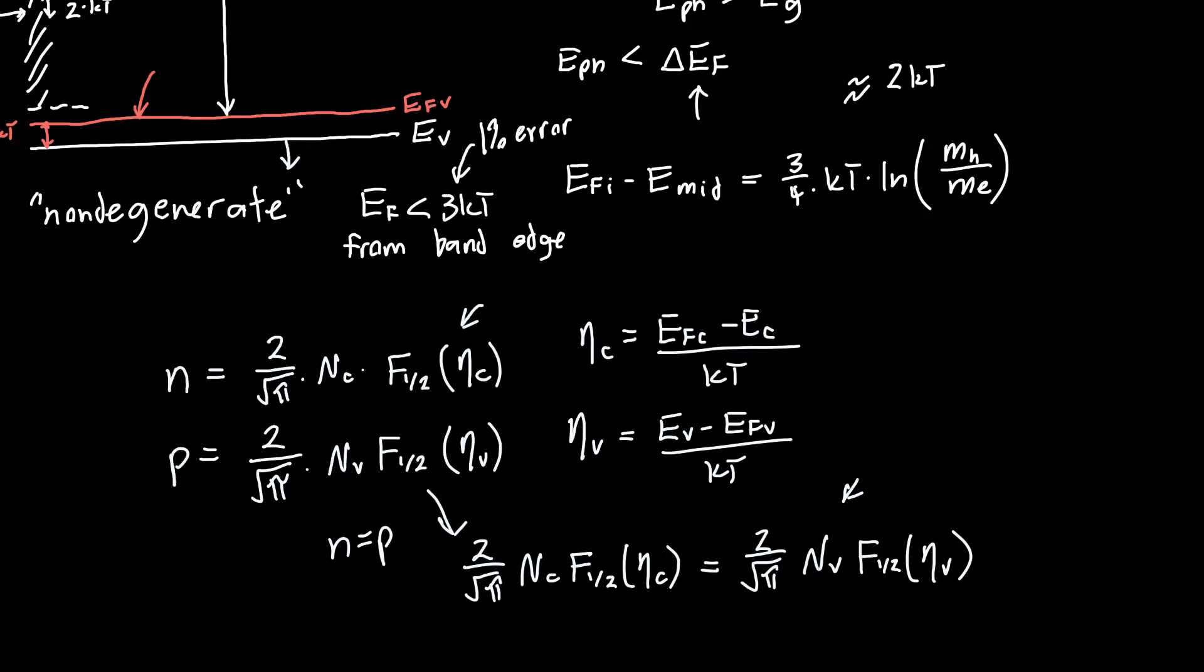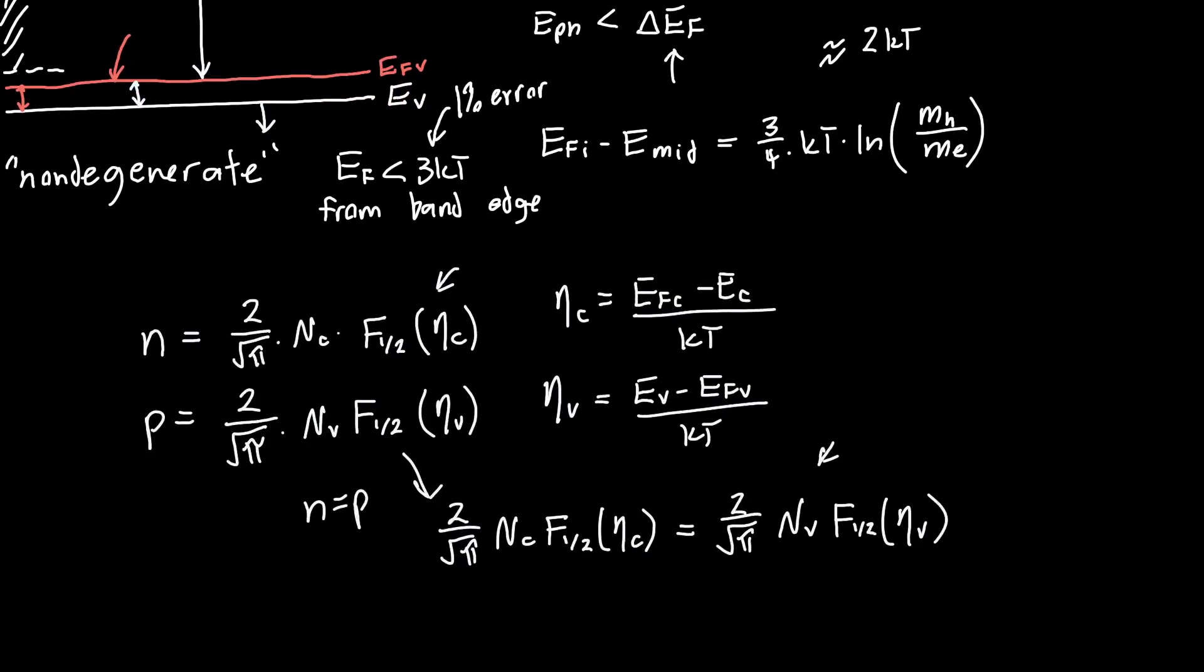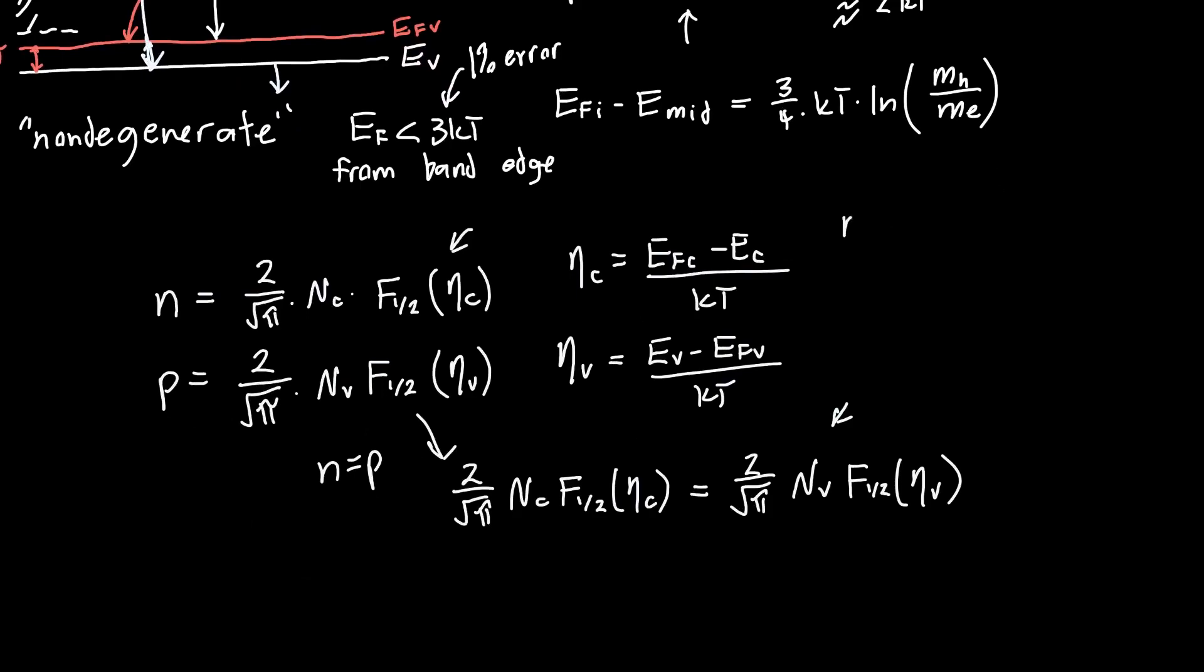But in fact, this eta c, so this distance here, we know if our Fermi splitting is equal to the band gap, it has to be the same as this distance here. You could prove this to yourself mathematically by just adding eta c and eta v. What you'll get is if you say that delta EF is equal to EG, which is what we're looking for to find the transparency carrier density, then you'll find that eta v is equal to negative eta c.